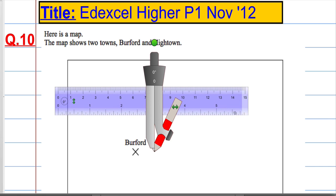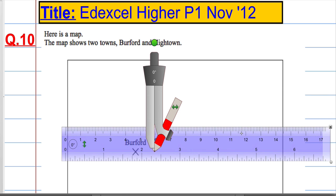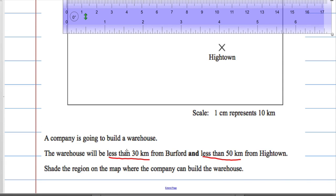Now, this ruler, at the moment, is not big enough, so I'm going to make it a bit bigger. Okay, so that it works. Right, now, it says 30 km, well, 1 cm is 10 km, so that would be 3 cm.